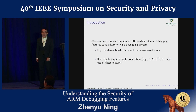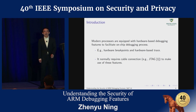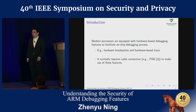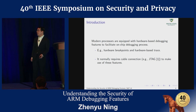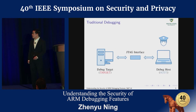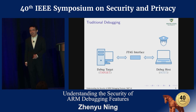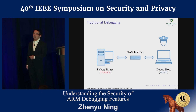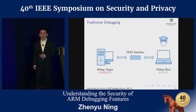Modern processors are normally equipped with hardware-based debugging features. For example, we have hardware-based breakpoints, and also hardware-based trace components. To make use of these hardware debugging features, it normally requires a physical connection, like a J-Hack cable connection to the device. This is an example of the traditional debugging mode. In this mode, we have a debug host on the left and a debug target on the right. We connect the host and target with a J-Hack cable, and you can sit in front of the debug host and try to debug the target via the J-Hack interface.